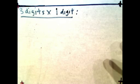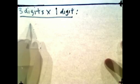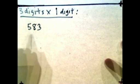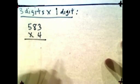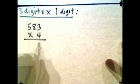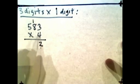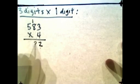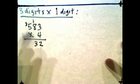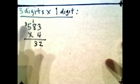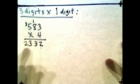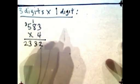Now let's move on to 3 digits times 1 digit. Let's say you have 583 times 4. So 3 times 4 is 12. Carry the 1 over. 8 times 4 is 32 plus 1 is 33. Carry the 3 over to this side. 5 times 4 is 20 plus 3 is 23. So 2,332.